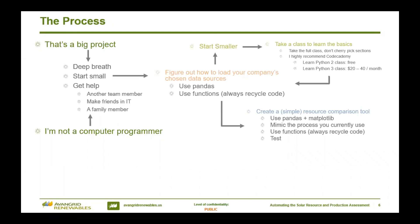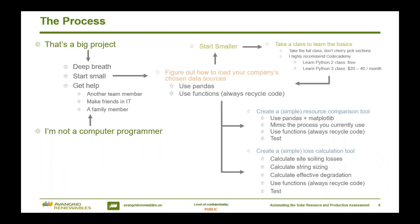I went through this and mimicked the process that Avangrid currently uses — kept testing, kept using those functions and best practices until I was able to exactly replicate what I would do manually. And then once this was in place, I was ready to just start building tools for different loss factors. It started with a soiling loss tool, then we needed a string sizing tool that was a little more robust, and from there we wanted to look at effective degradation. The great part about these is that they're super valuable as standalone tools — I don't need a fully automated process to make really great use of a soiling loss tool.